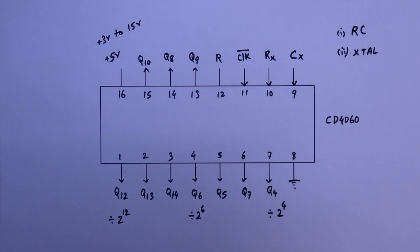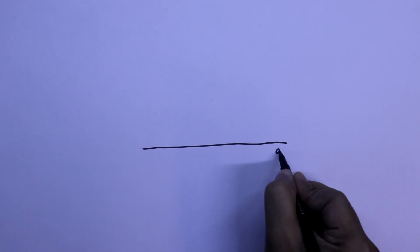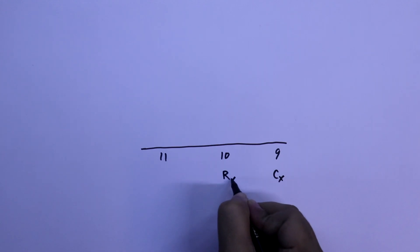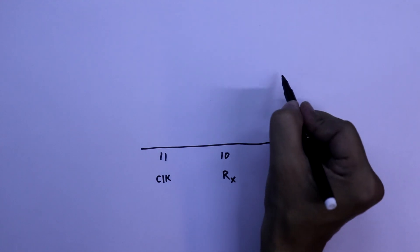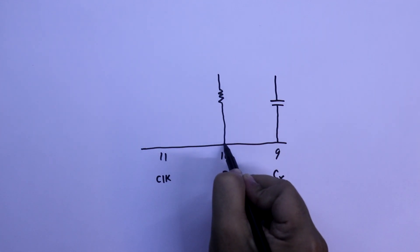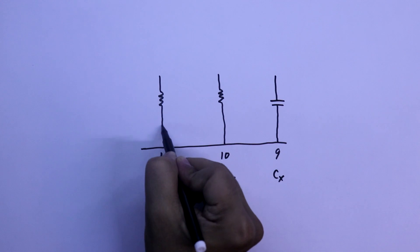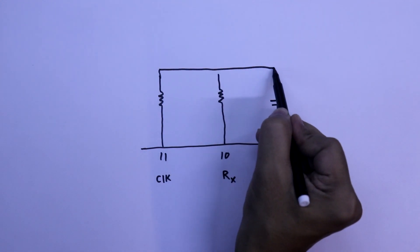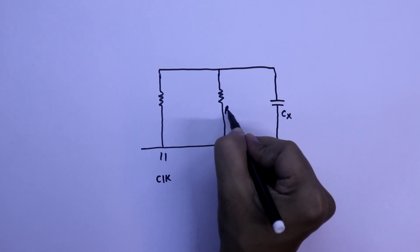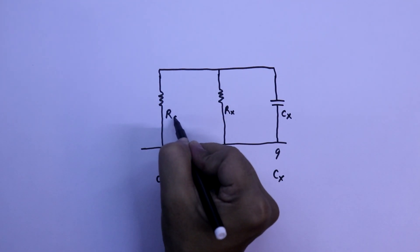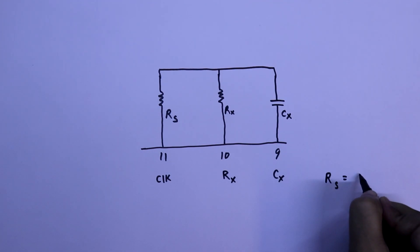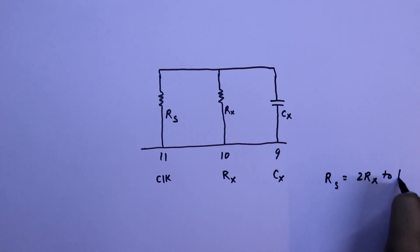So first we will see the RC oscillator. For the RC oscillator, we need pin number 9, 10, and 11. Pin number 9 is CX, pin number 10 is RX, and pin number 11 is the clock input. With pin number 9 we have to connect a capacitor, with pin number 10 a resistor, and with pin number 11 another resistor. This resistor on pin 11 is called RS.